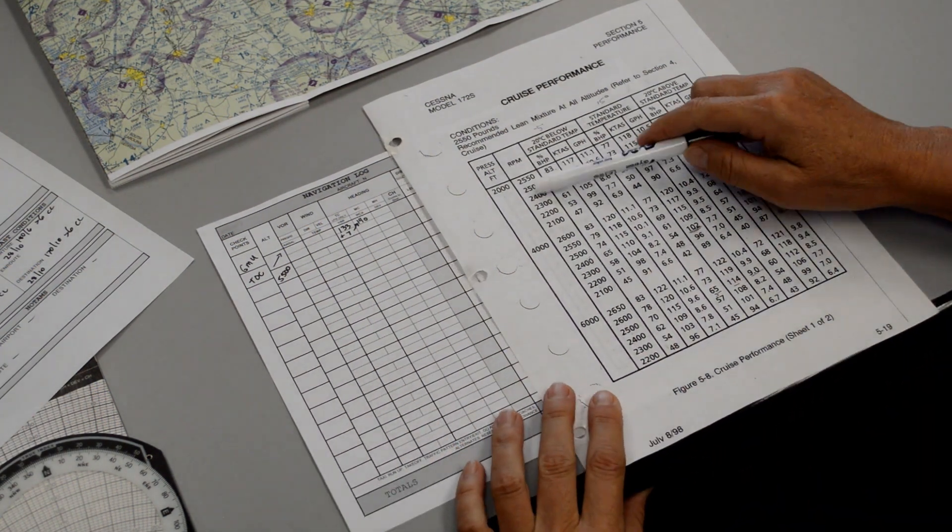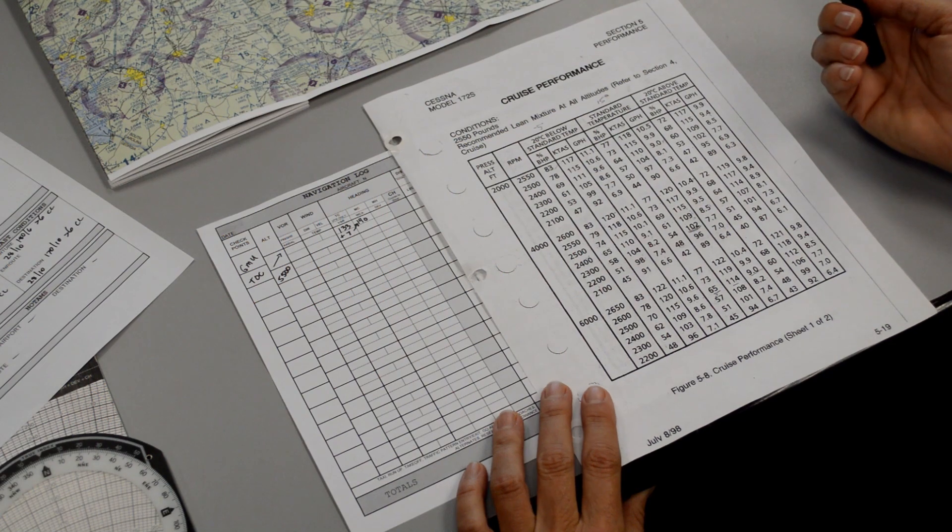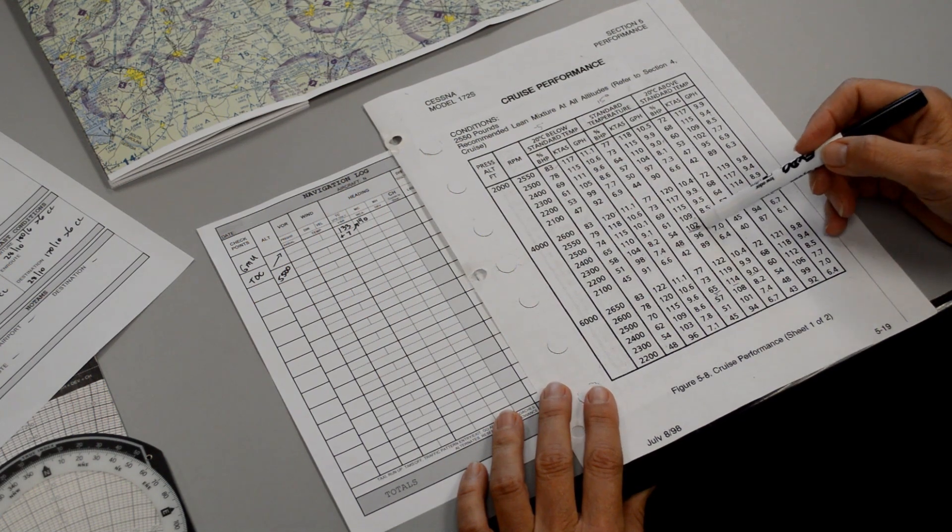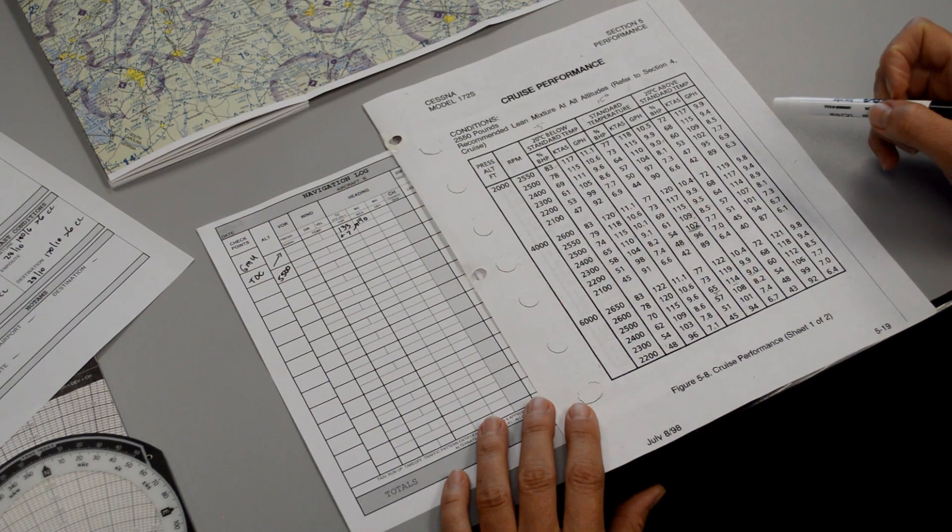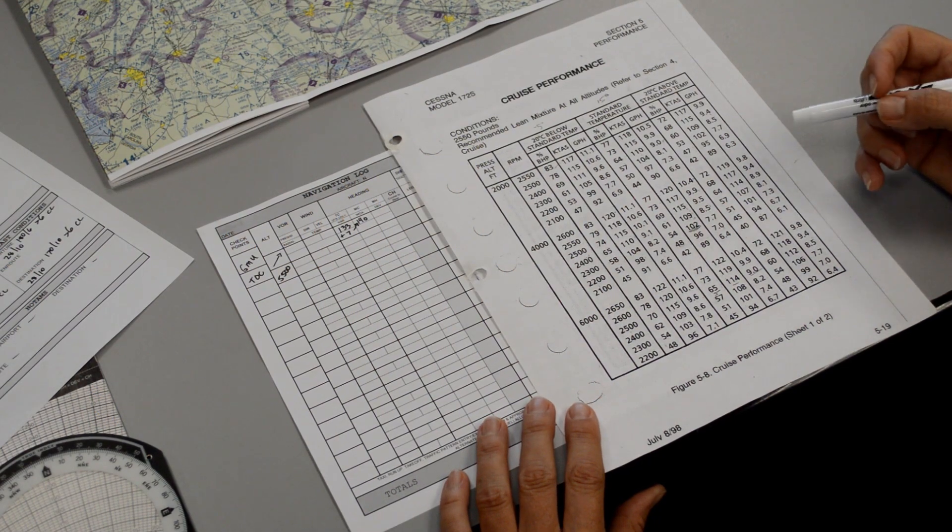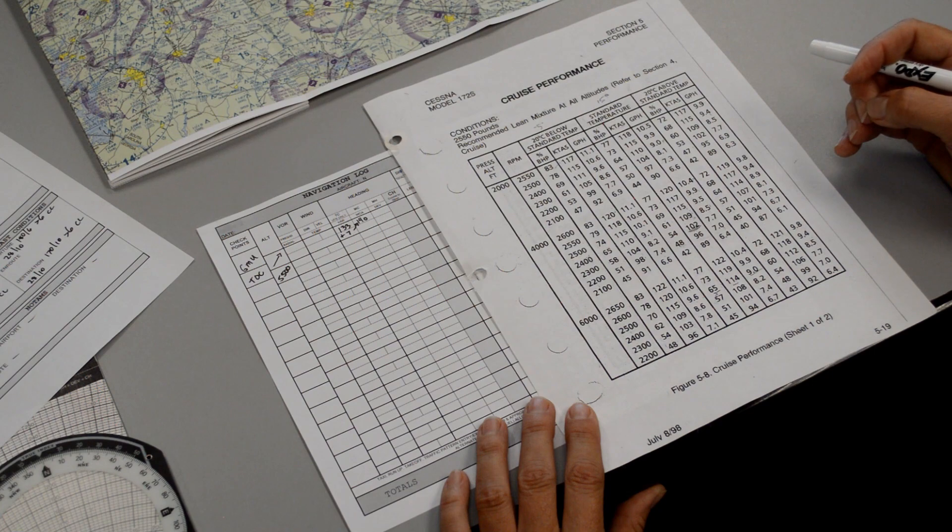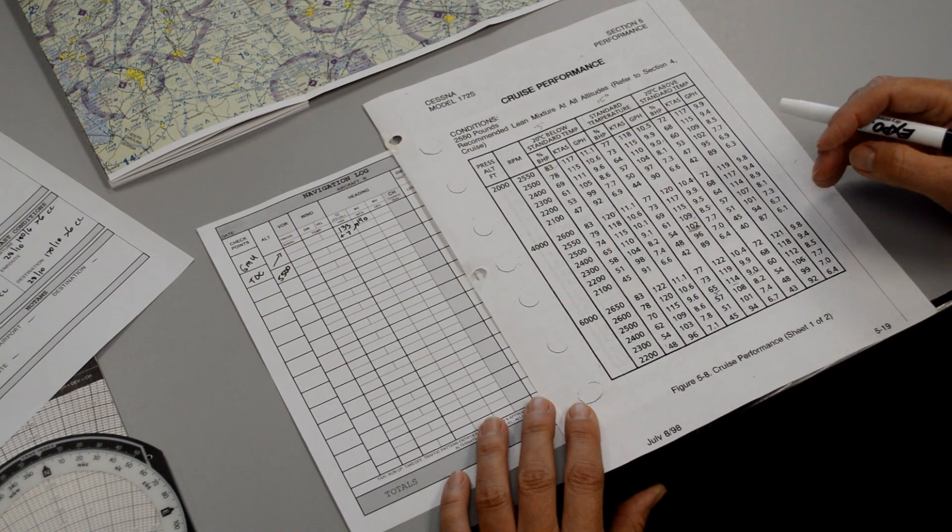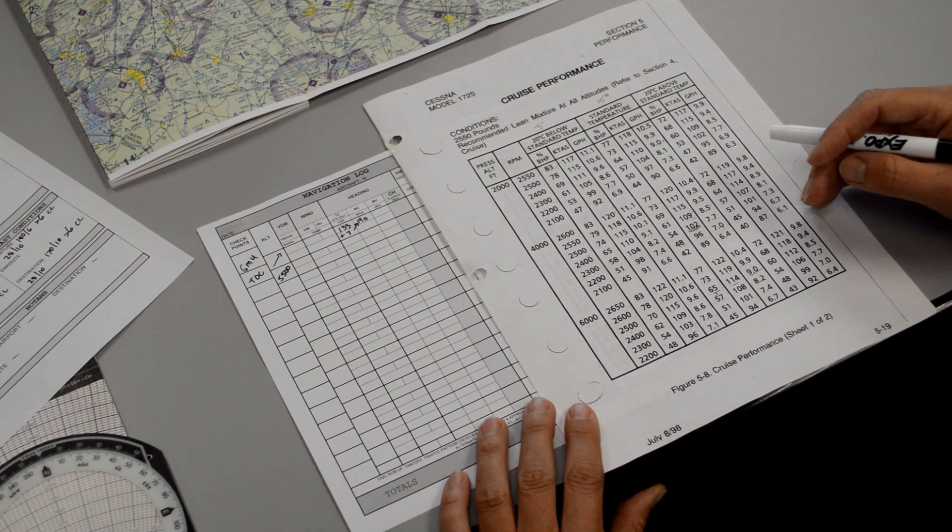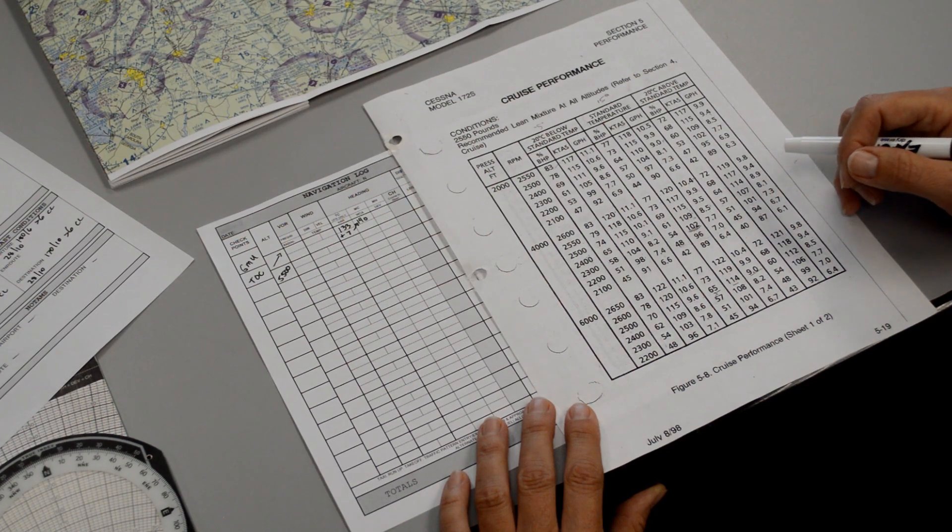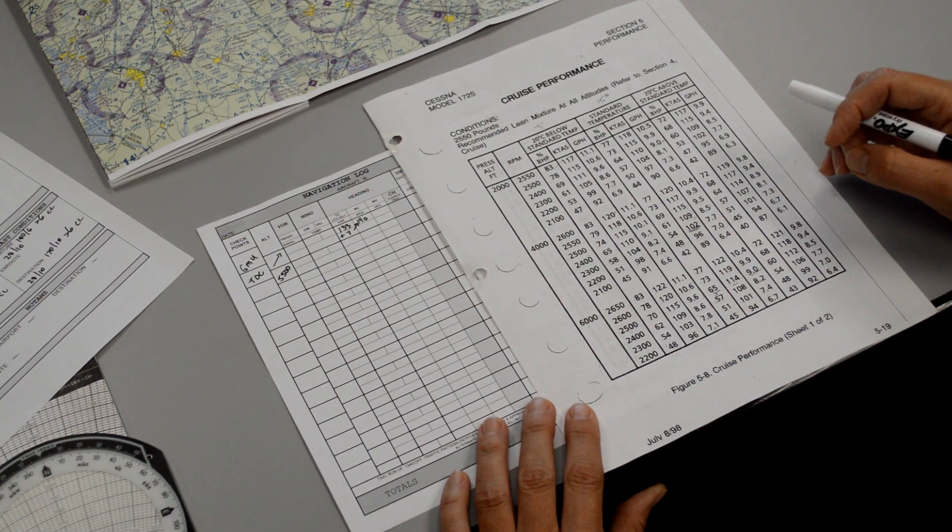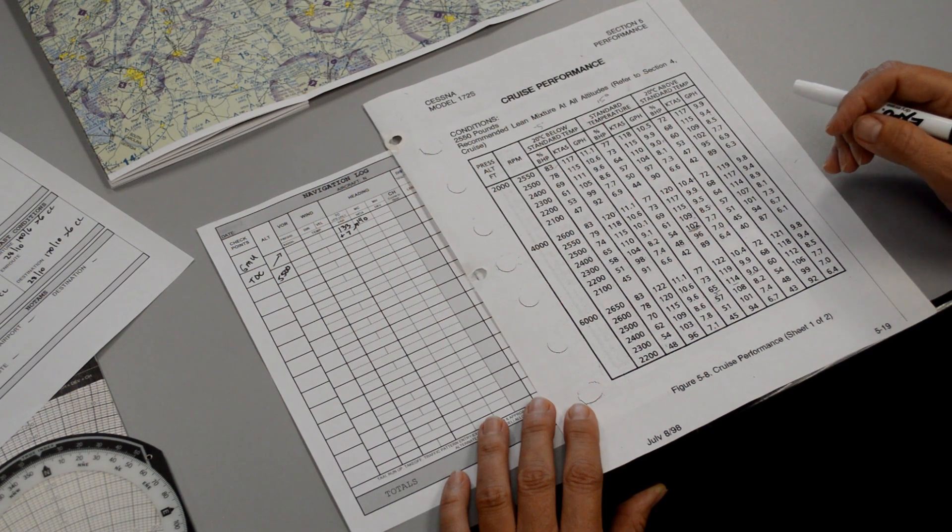We need to decide on what RPMs, what percent power we want to fly. Some students put the power setting to 2200 RPMs every single flight because that's what their instructor tells them to do when practicing maneuvers. But if we're going cross country, we may want to fly faster to hurry up and get there, or maybe fly slower to conserve fuel. That depends on what we'd like to do for that particular flight.